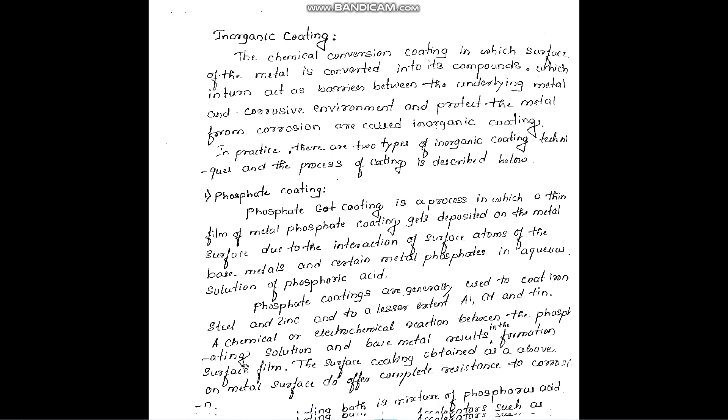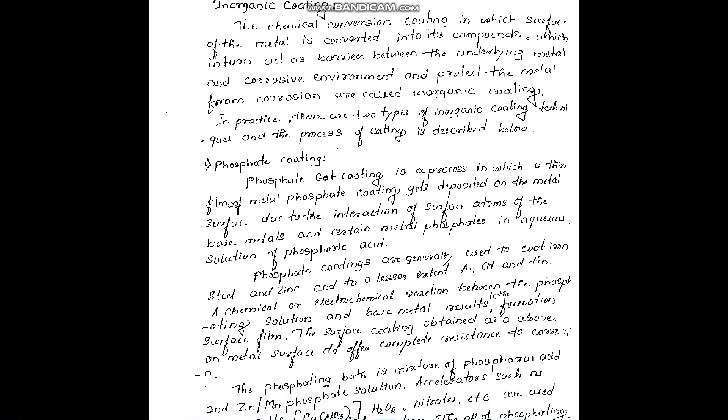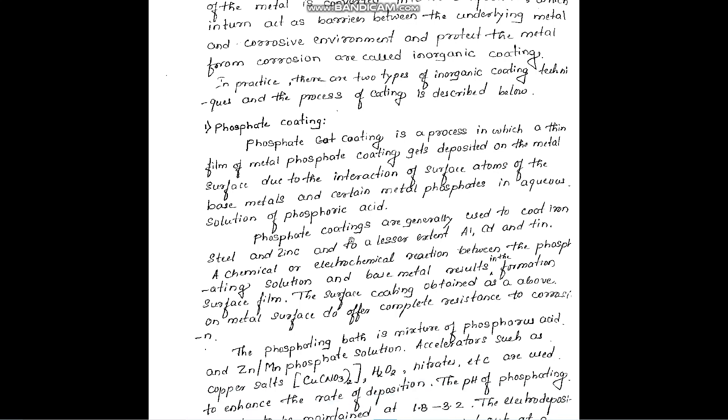In inorganic coating, the first one is phosphate coating. In phosphate coating, a thin film of metal phosphate coating gets deposited on the metal surface due to interaction of surface atoms of the base metal and certain metal phosphates in aqueous solution of phosphoric acid. The phosphate coatings are generally used to coat iron, steel and zinc, to a lesser extent aluminum, cadmium and tin.